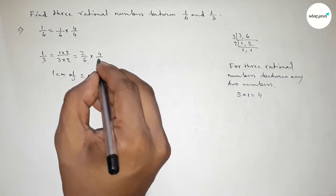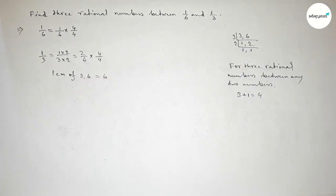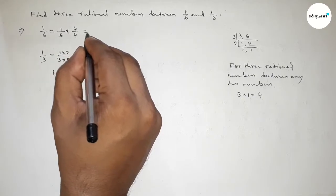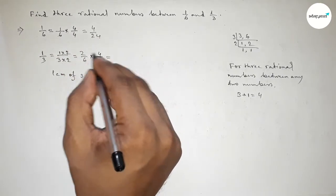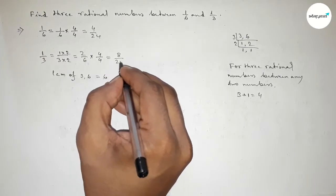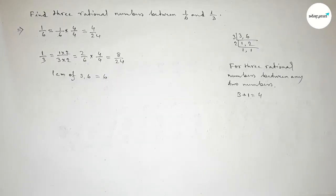By this way, so here equal to 4 over 24 and here 8 over 24. Now between 4 to 8 we can get three natural numbers.